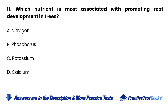Question 11. Which nutrient is most associated with promoting root development in trees? A. Nitrogen. B. Phosphorus. C. Potassium. D. Calcium.